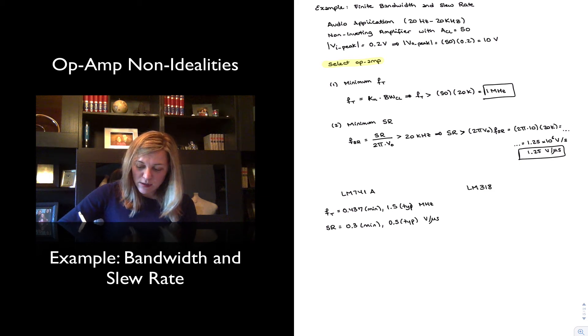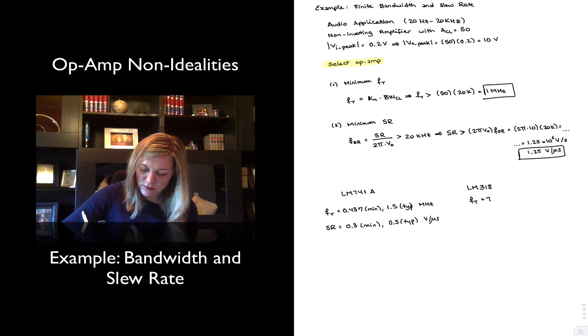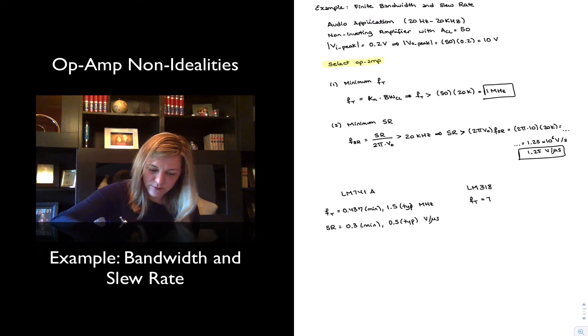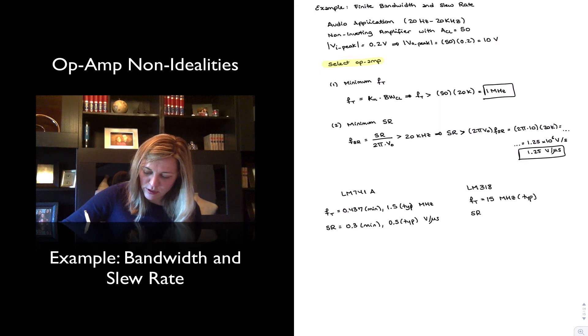Whereas the LM318 has a unity gain frequency of 15 megahertz typical, and a slew rate of 50 volts per microsecond typical.